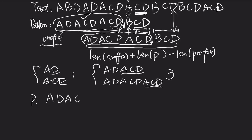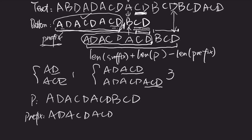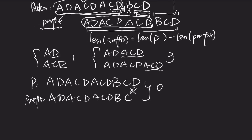The pattern string is AC, ACD, ACD, BCD. The longest prefix is AD, ACD, ACD, ACD, BCD. You can see the longest common surface between these two is 0 because D is not equal to C. We shorten the prefix — still 0. Shorten again — still 0. Shorten again.